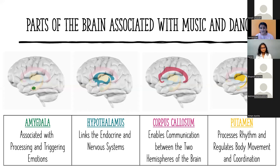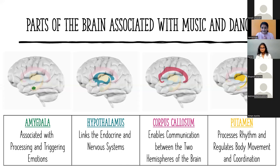Other parts include the amygdala, associated with processing and triggering emotions — when you suddenly hear a piece of music and get goosebumps or chills down your spine, that's all because of the amygdala; you feel emotionally connected to the music. The hypothalamus is the master gland, linking the endocrine and nervous systems. The corpus callosum enables communication between the two hemispheres — your brain is divided into right and left hemispheres, and by doing music, dance, or any creative activity you're actually helping the corpus callosum improve and strengthening communication between the two hemispheres.